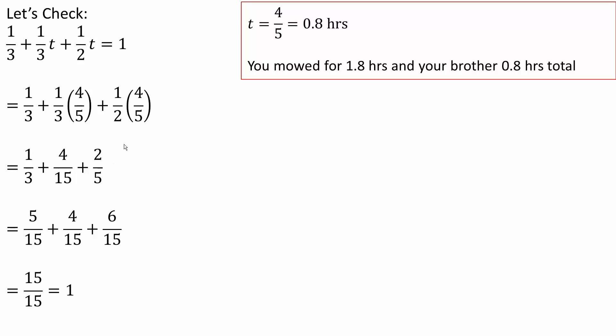Next, I need to get a common denominator of 15. Multiply by five to get 5/15. Multiply by three to get 6/15. So I get 5/15 + 4/15 + 6/15. Four plus six is 10, 10 plus five is 15, and 15/15 = 1.